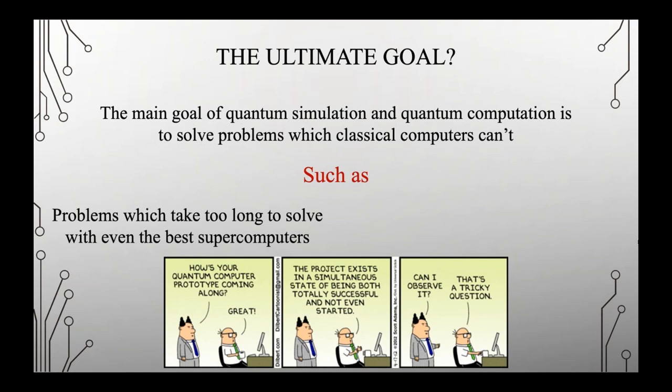You can ask whether any of these problems really matter. And yes, because even basic chemistry can be really difficult to simulate using a classical device. When you get quite a few molecules or complicated interactions, the problem becomes far too difficult to solve classically. If you can simulate even basic chemical reactions, you can make many processes far more energy efficient — for example, in the production of fertilizers, which use ammonia. So it has the potential to be useful across a broad range of fields.